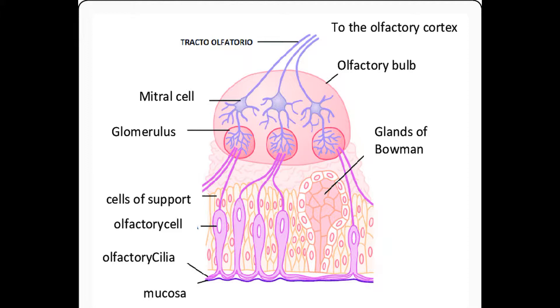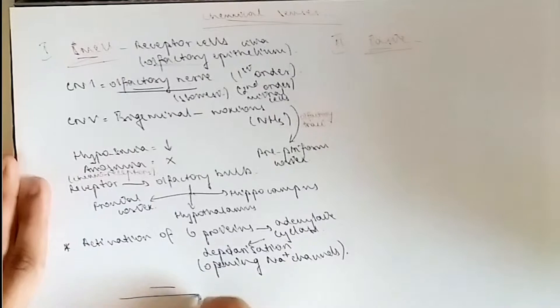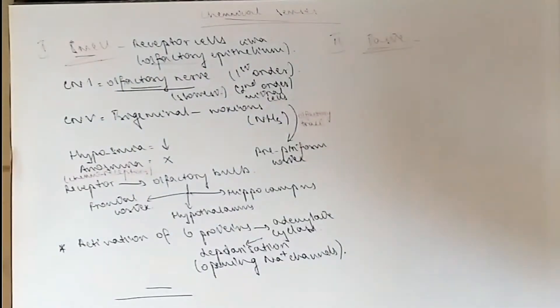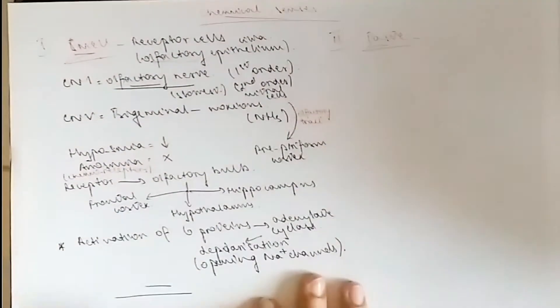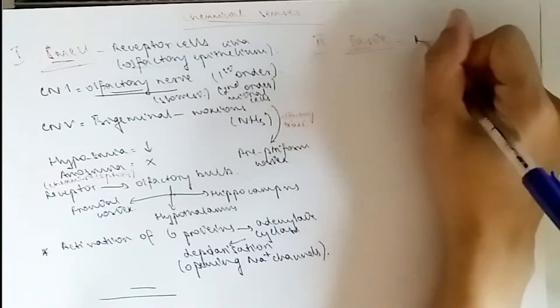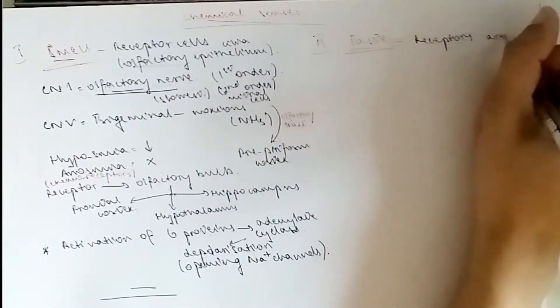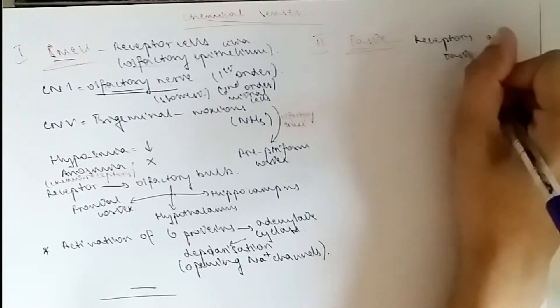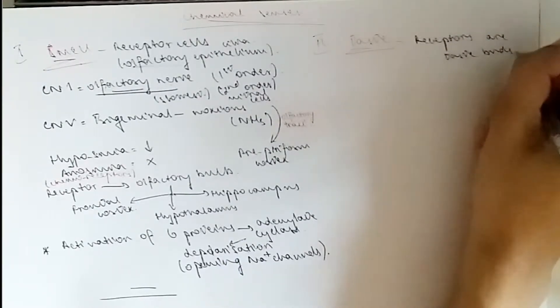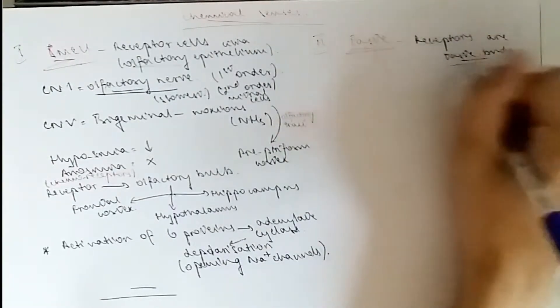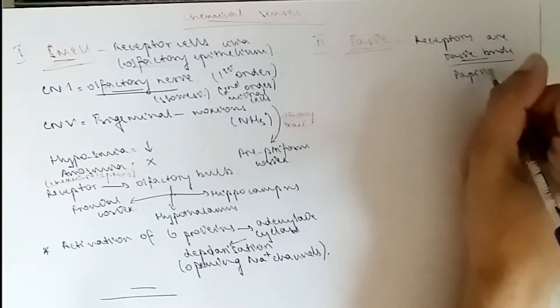That would be for smell. Now moving on to taste. The receptors are located obviously in the tongue, and you have the receptor cells are the taste buds. Now the taste buds, they are not neurons, they're not nerves like the olfactory nerve. They are specialized papillae.